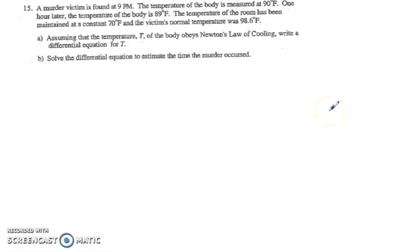Okay, here we have another Newton's Law problem, but this time with a body, and we're trying to find the time of death. So we found the body at 9 PM, and we know that the temperature of the body at that moment is 90 degrees. One hour later, the temperature of the body is 89 degrees.